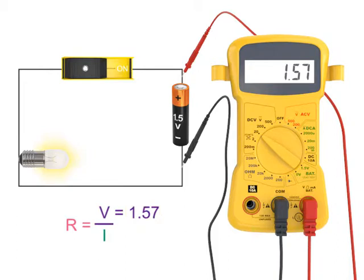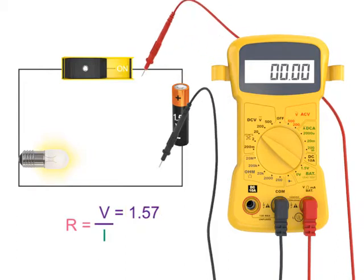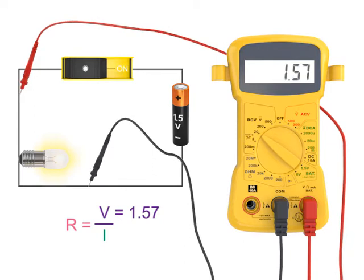Now, let's measure the voltage across the light bulb. As expected, with current flowing, it too is 1.57 volts.